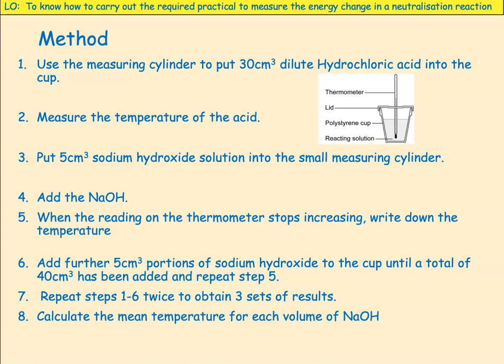Add the sodium hydroxide into the acid. When the reading on the thermometer stops increasing, write down the temperature in your table. Add further 5 cm³ portions of sodium hydroxide to the cup — so you add the first 5, then another 5 to make 10, then another 5 to make 15 — until a total of 40 cm³ have been added, recording the maximum temperature each time.